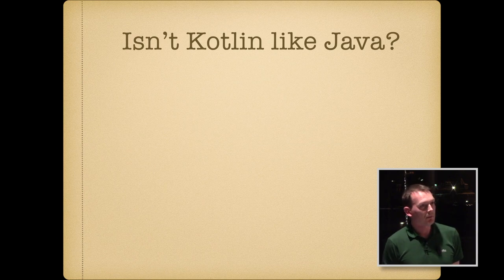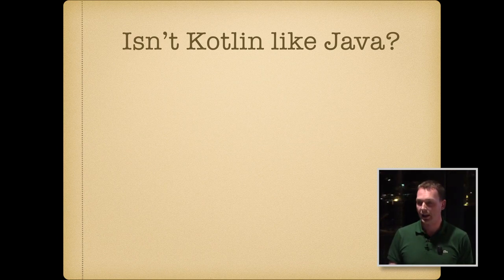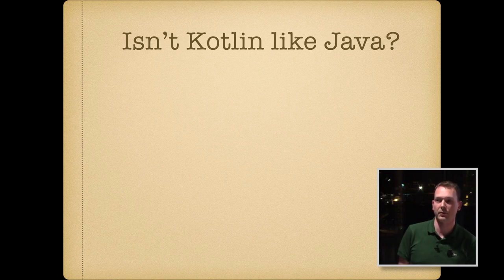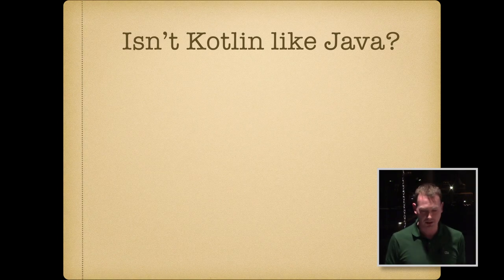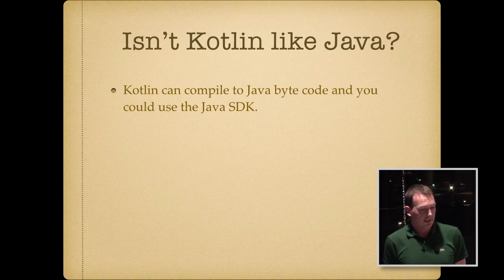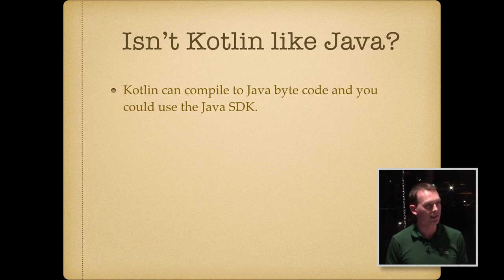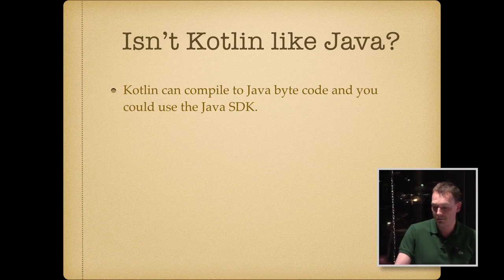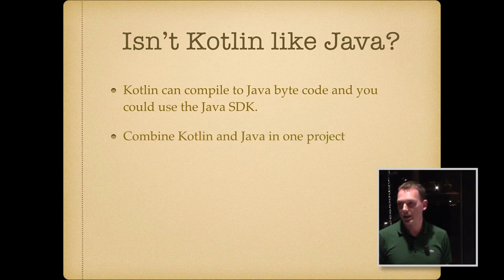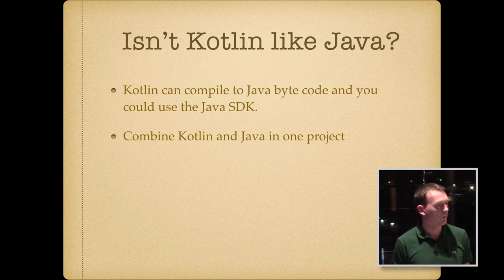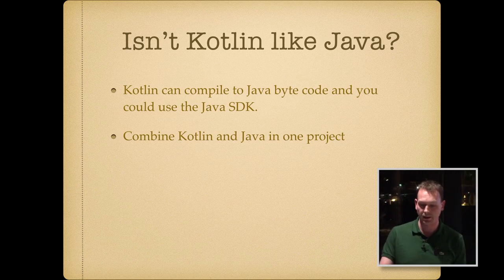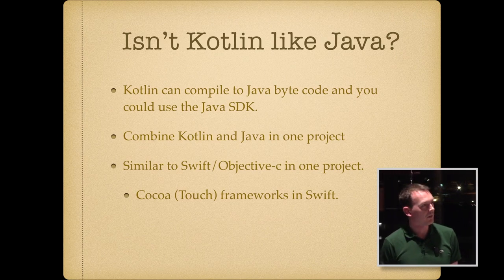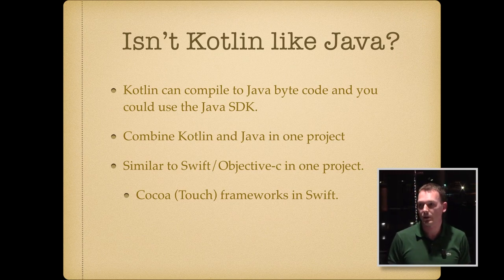If people think of Kotlin, they might think of Java, because initially it was kind of a replacement for Java — or actually, you can make Java applications in it. That is true. Kotlin can compile to Java bytecode, you could use the Java SDK in there, and just write a Java application basically. You can combine both Kotlin and Java in the same project. So you'd have one Kotlin file which might use some of your Java classes, and in the Java file you could use the Kotlin things. It's quite similar to how Swift and Objective-C work together in one project.